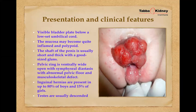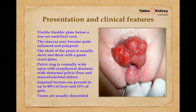On X-ray of the pelvis, the pelvic ring is ventrally wide open. Trying to feel the pubic bones with two thumbs is not possible because of the tissue mass. There is wide symphysial diastasis with an abnormal pelvic floor. The distance between the two pubic bones is usually about 2.5 cm on average. Inguinal hernias are present in up to 80% of boys and 15% of girls. Usually the testes are descended and the scrotum is well formed.